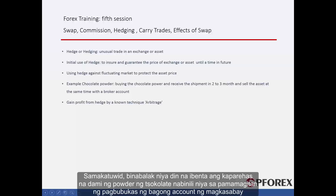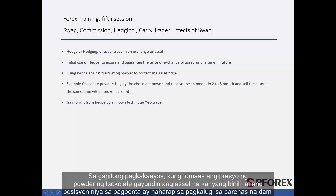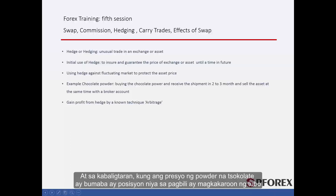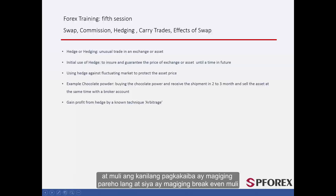Therefore, he also intends to sell the same amount of the chocolate powder he bought by opening a new account at the same time. With this arrangement, if the price of the chocolate powder rises, so will the asset he bought, and his sell position will face losses with the same amount. In basic terms, this means that he will break even, and vice versa — if the price of the chocolate powder drops, the buying position will make a profit, and again their difference will be the same and he will break even again. In this way, all businessmen can ensure their assets within the market.